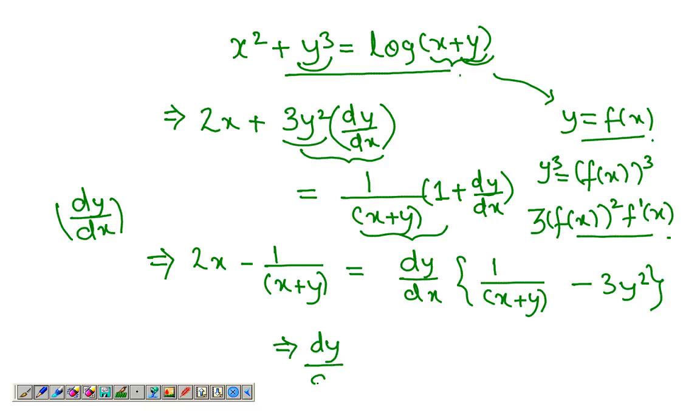So dy over dx would simply be this thing over this whole thing. So that makes it this, take away 3y squared. That's your answer - another example of implicit differentiation.